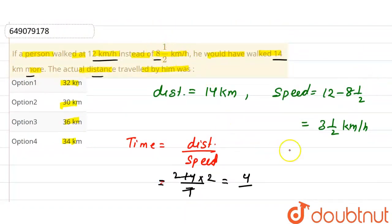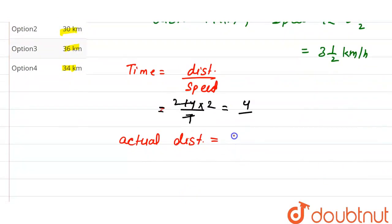So 8 is 16 and 1 is 17, so 17/2 km per hour. Then 17/2 km per hour for 4 hours. 2 times 2 is 4, then 17 times 4 is 34 kilometers.